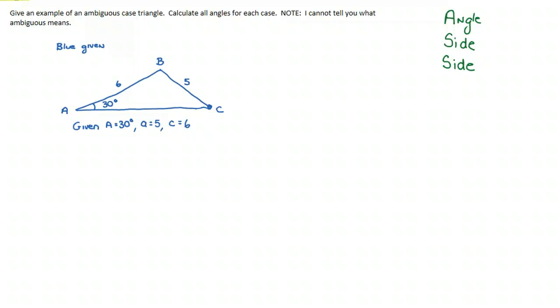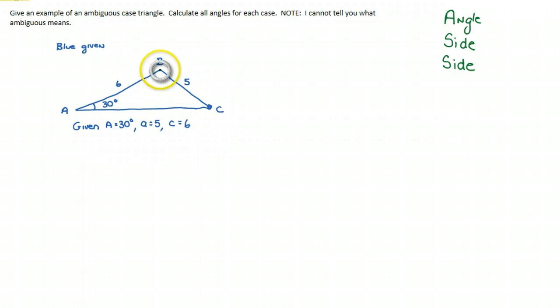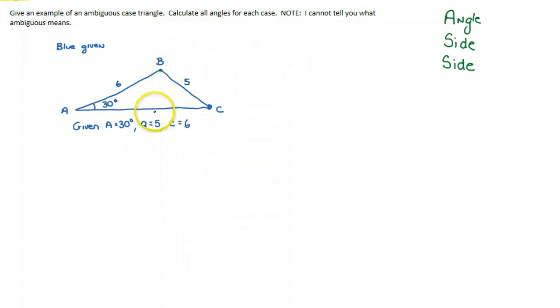The reason why there's more than one triangle that can be drawn is because think of this: you see this length BC here, which is length a. Imagine this point B was fixed, and then you could swing this arm. In fact, it could actually be drawn like this.